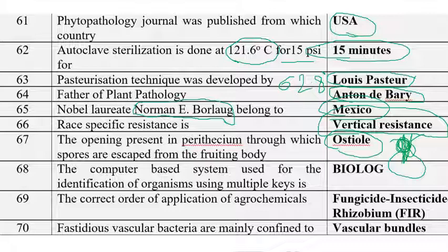A computer-based system used for the identification of organisms with multiple keys is BIOLOG, which can also be used for calculating epidemic models. The correct order of application of agrochemicals is FIR — Fungicide first, then Insecticide, then Rhizobium. This can be remembered as 'FIR.'